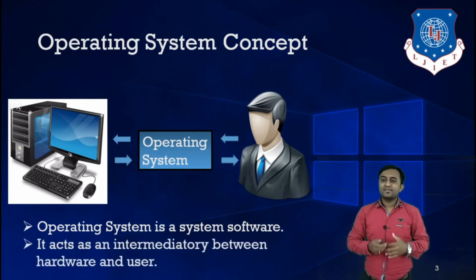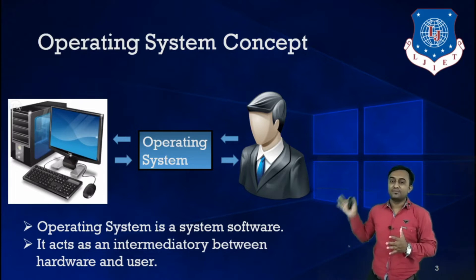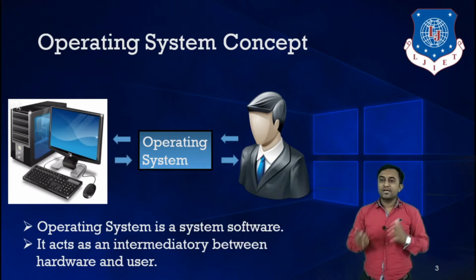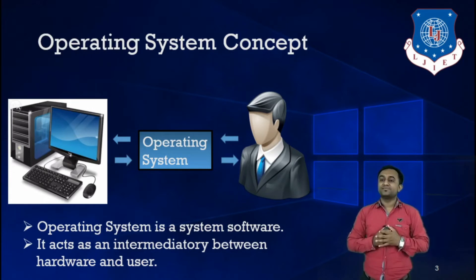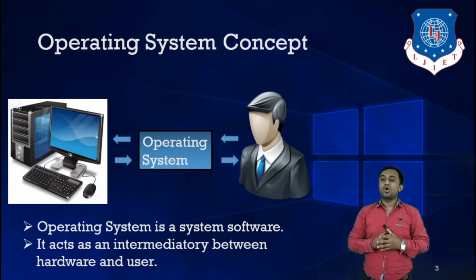So what is an operating system? Operating system acts as an intermediary between hardware and user, or we can say application program. As you can see in this figure, we have one computer system and one user, and between user and computer hardware we have one operating system. Operating system provides an interface between hardware and user, or we can say application program.